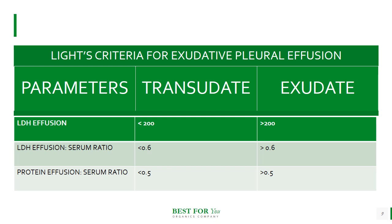These are Light's criteria to differentiate between exudative and transudative effusion. After obtaining the aspirated fluid, we check the following parameters: LDH in the effusion — if less than 200 units per liter it is a transudate, if more than 200 it is an exudate. LDH effusion-to-serum ratio — if less than 0.6 it is a transudate, more than 0.6 is an exudate. Protein effusion-to-serum ratio — if less than 0.5 it is a transudative effusion. In a transudate there will be less protein and less LDH compared to serum levels.